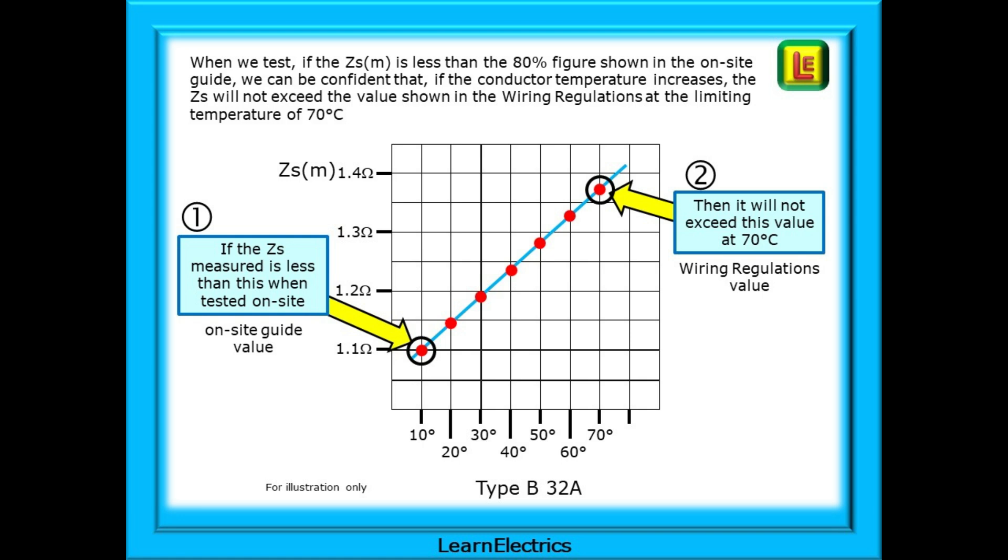And finally when we test if we can show that the ZS measured is less than the 80% figure shown in the onsite guide we can be confident that if the conductor temperature increases the ZS will not exceed the values shown in the wiring regulations at the limiting temperature of 70 degrees Celsius and that's all that we want to do.